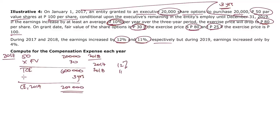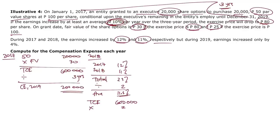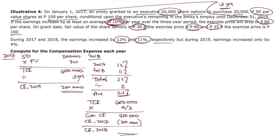For 2018: earnings increased by 11%. Average over two years: (12% + 11%) / 2 = 11.5% — still above 10%, so exercise price is 80 and fair value is still 30. Total compensation expense remains 600,000. Cumulative: 600,000 times 2/3 equals 400,000. Compensation expense for 2018: 400,000 minus 200,000 equals 200,000 pesos.